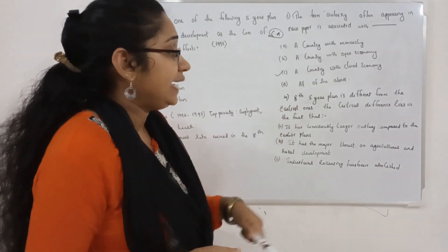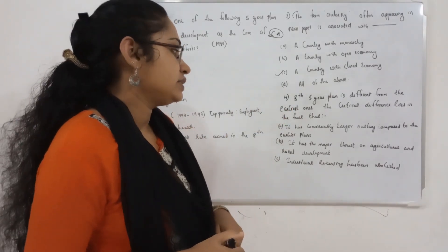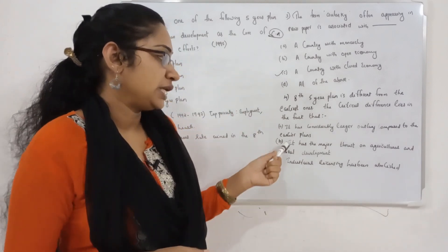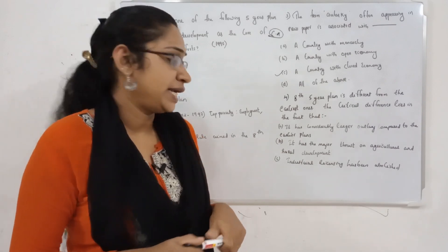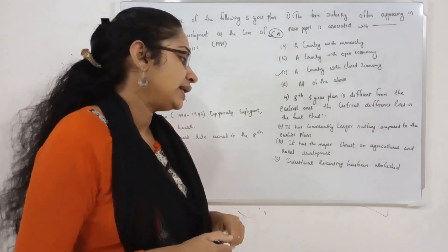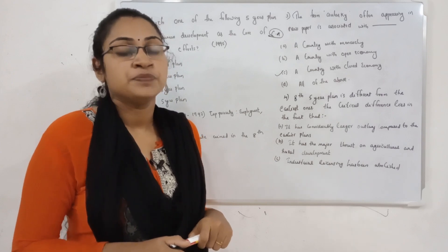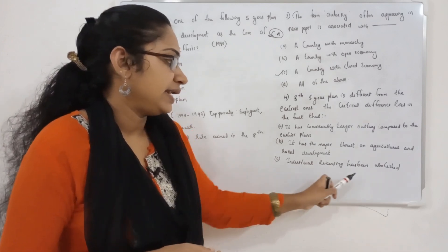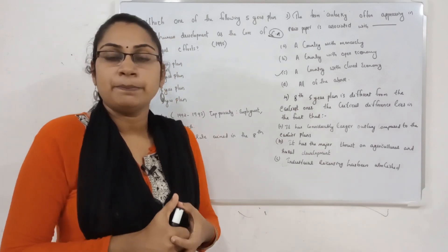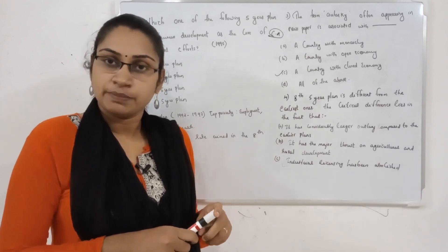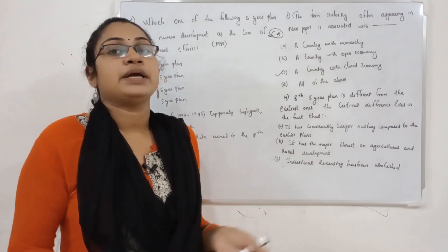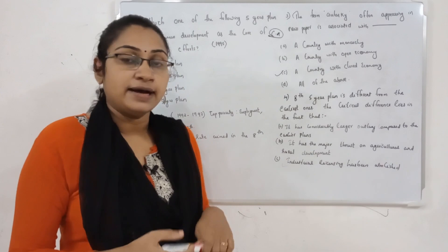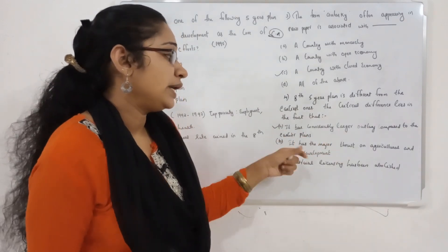Question number 4: The critical difference of the 8th Five Year Plan lies in the fact that — Option A: it has a considerably larger outlay compared to the earlier plan. Option B: it has the major thrust on agriculture and rural development. Option C: industrial licensing has been abolished. The answer is Option A — it has a considerably larger outlay compared to the earlier plan.